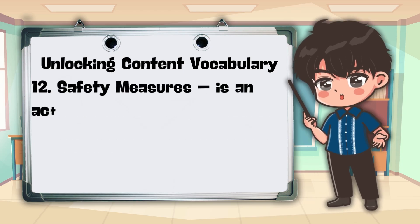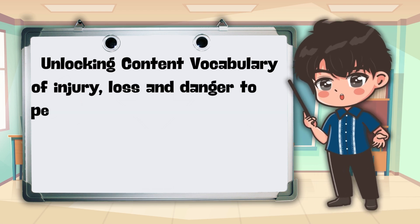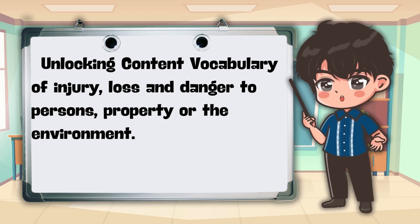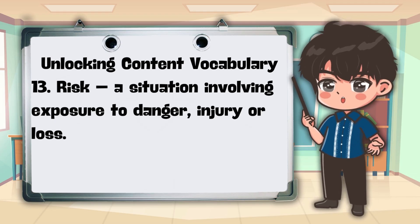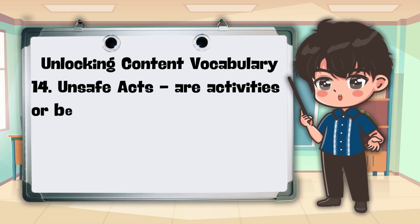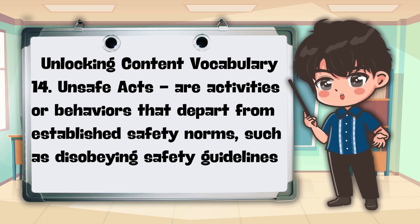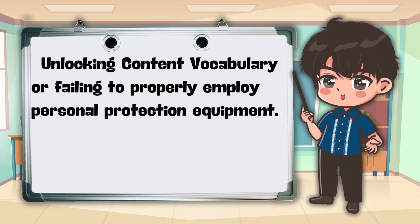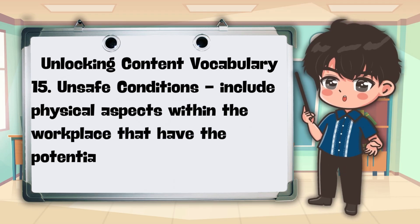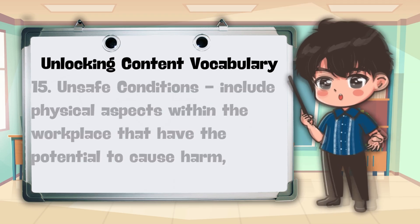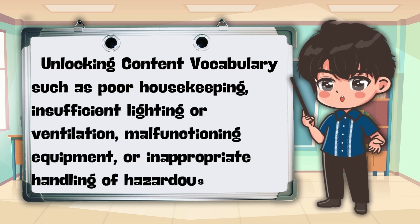12. Safety Measures — It is an action or procedure designed to lower the occurrence or risk of injury, loss, and danger to persons, property, or the environment. 13. Risk — It is a situation involving exposure to danger, injury, or loss. 14. Unsafe Acts — These are activities or behaviors that depart from established safety norms, such as disobeying safety guidelines or failing to properly employ personal protective equipment. 15. Unsafe Conditions — These include physical aspects within the workplace that have the potential to cause harm, such as poor housekeeping, insufficient lighting or ventilation, malfunctioning equipment, or inappropriate handling of hazardous products.